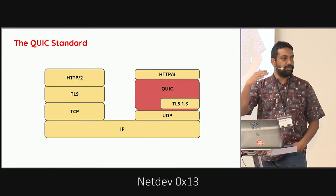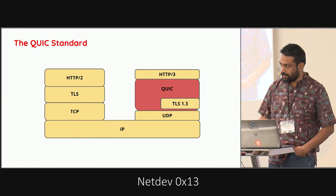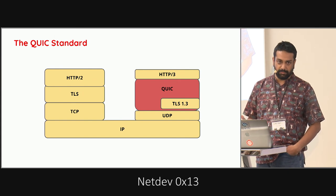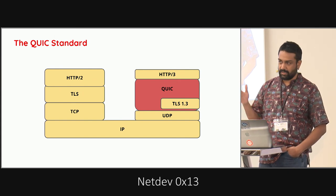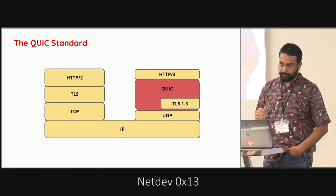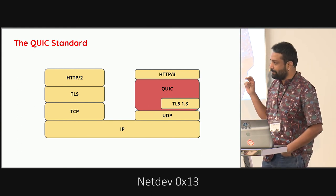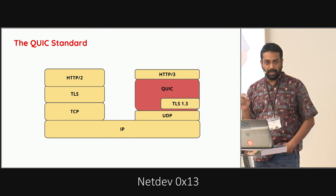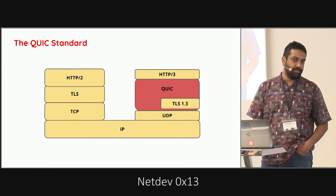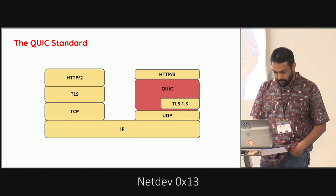Running HTTP on top of QUIC is now HTTP/3. The version of HTTP that runs on top of QUIC is quite different from HTTP/2, because much of that functionality has been subsumed in QUIC. TLS 1.3 is effectively embedded in QUIC. These are the IETF internet drafts — you're welcome to go read them if you feel like you're unable to fall asleep.